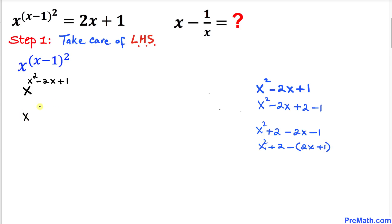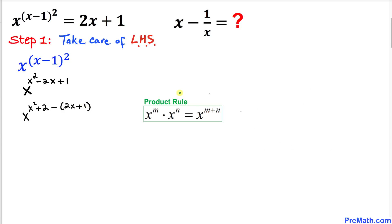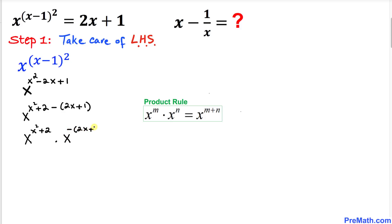Therefore we can write x power — I'm going to replace the exponent with this different form: x squared plus 2 minus (2x plus 1). Now we are going to use the product rule, which lets us separate the exponent parts. So this becomes x power (x squared plus 2) times x power negative (2x plus 1).